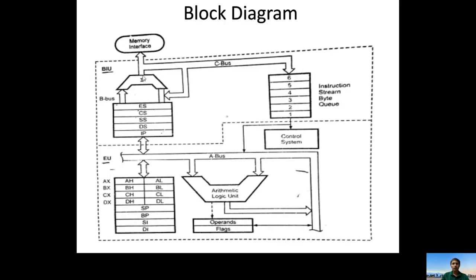After execution, the result moves back to the BIU and then to external memory via the segment registers and adder. The role of the adder is to convert the 16-bit logical address into a 20-bit physical address, because the 8086 has 20 address lines and requires a 20-bit address. The BIU fetches the instructions, places them in the queue, and the process repeats.